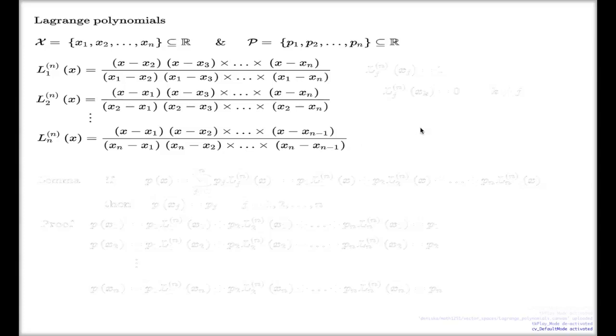Every such Lagrange polynomial is a polynomial of degree n take one with real coefficients. Because we have n take one brackets in the numerator, which brings you the polynomial of degree at most n take one. The value at denominator, even though it looks large, it's just a number. It's just a coefficient.